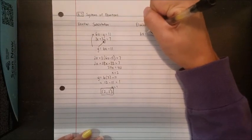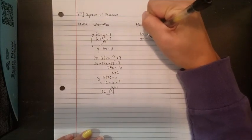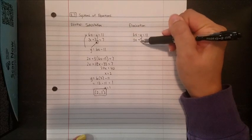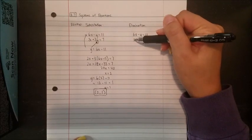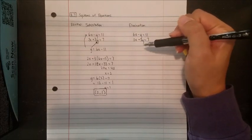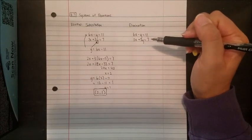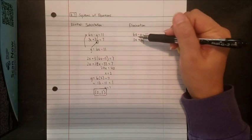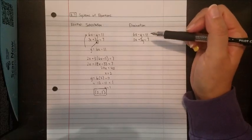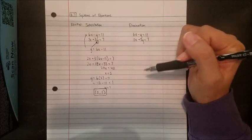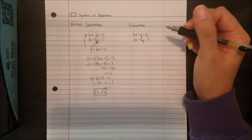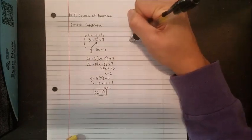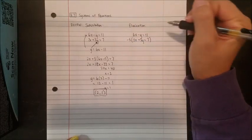Now for elimination using the same problem. Elimination is where we want either the x's or the y's to have the same coefficient in front, so that they cancel out — one positive, one negative. I'm going to eliminate the x's first by multiplying the bottom equation by negative 3, so every term in that equation gets multiplied by negative 3.